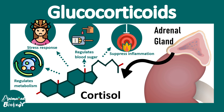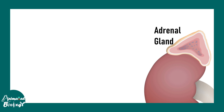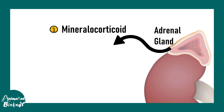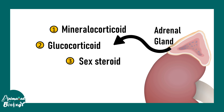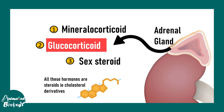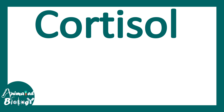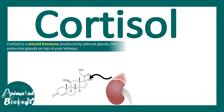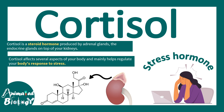In this video we'll be talking about glucocorticoids. Glucocorticoids are hormones secreted from the adrenal gland. Adrenal glands are situated on top of the kidney and secrete three important steroid hormones: mineralocorticoid, glucocorticoid, and sex steroids. The major glucocorticoid is cortisol, which is a steroid hormone and a cholesterol derivative, also known as a stress hormone.